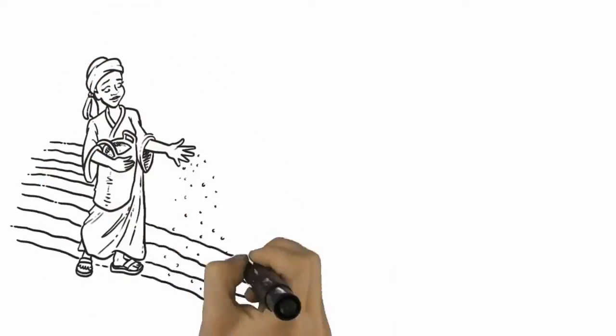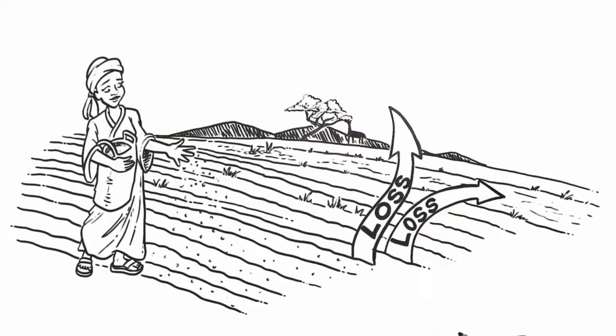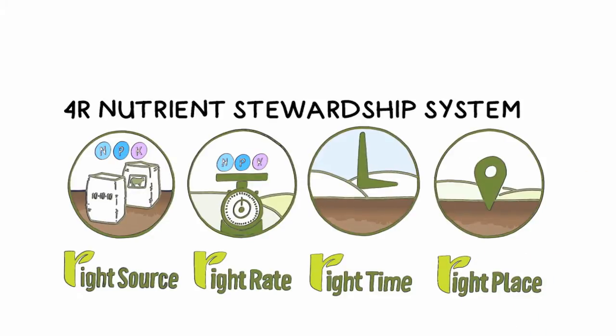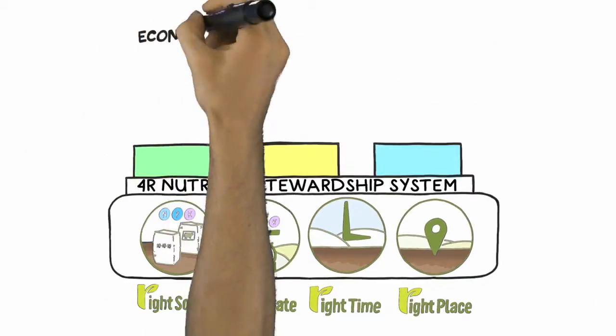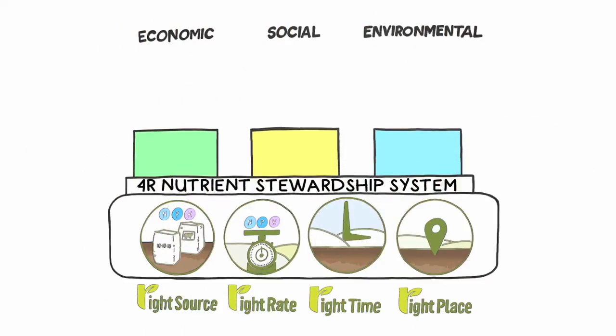But nutrient losses to the environment can occur if nutrients are not used properly. Growers use the 4R nutrient stewardship system to sustainably maximize the economic, social and environmental performance of nutrient application.